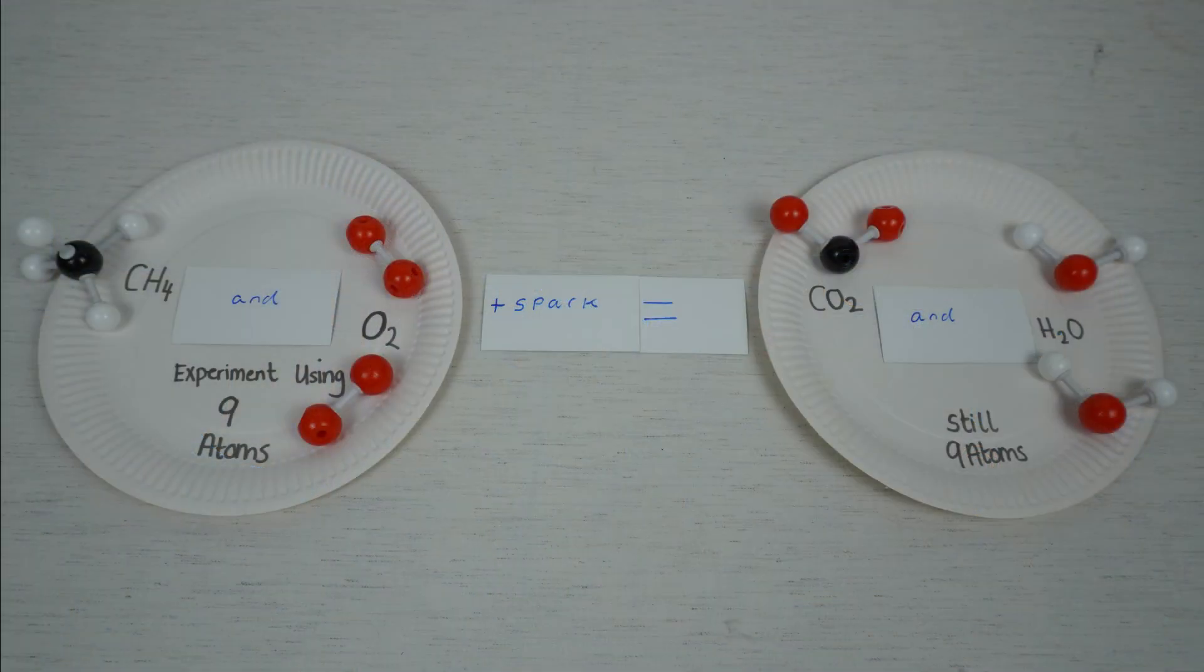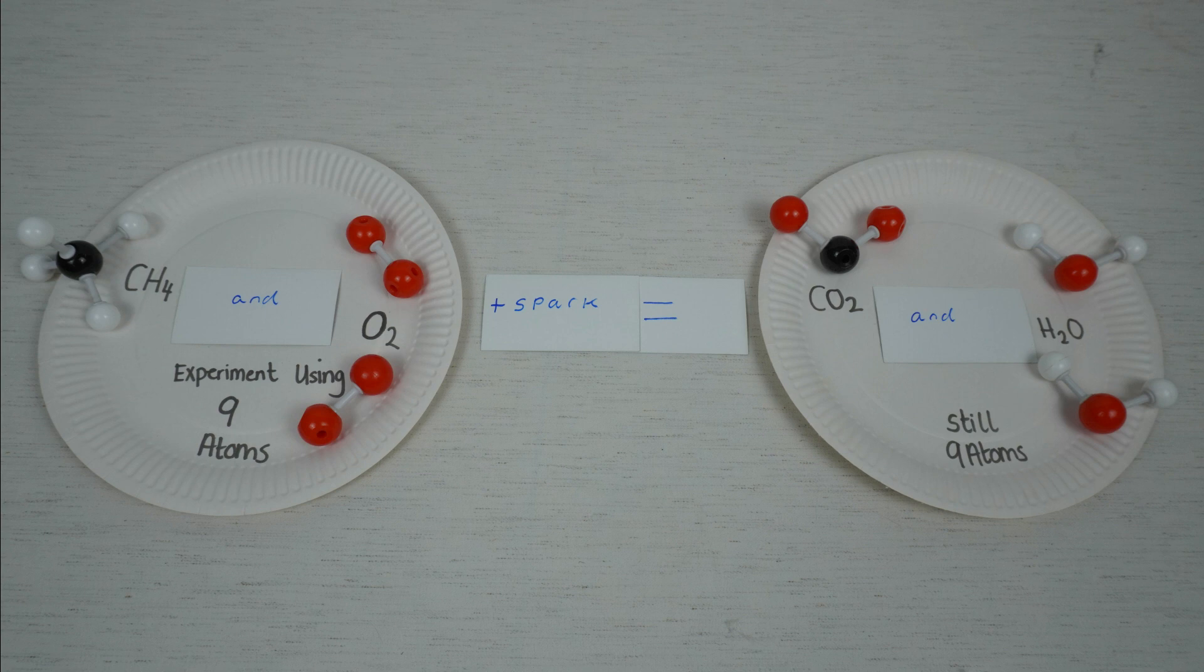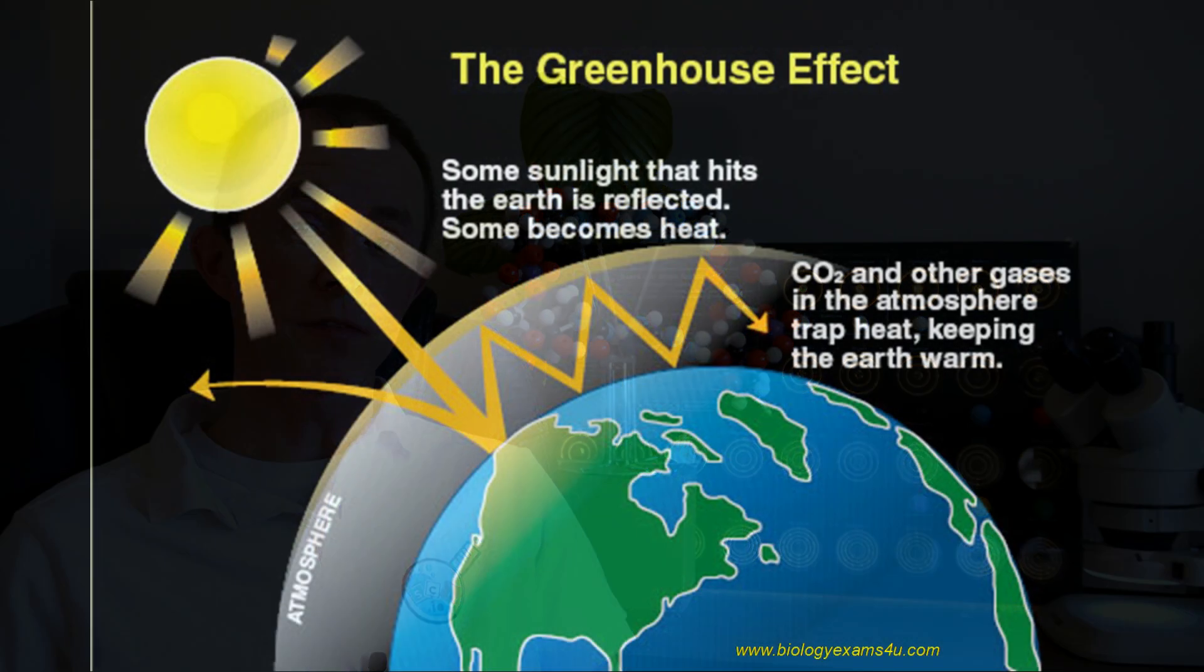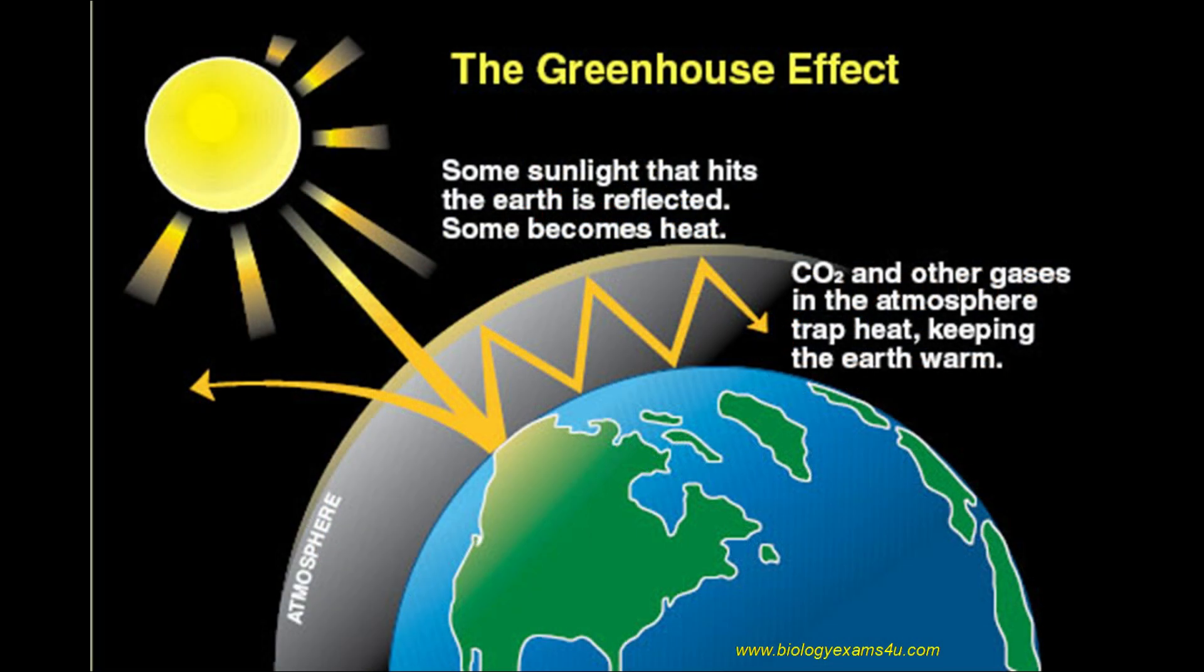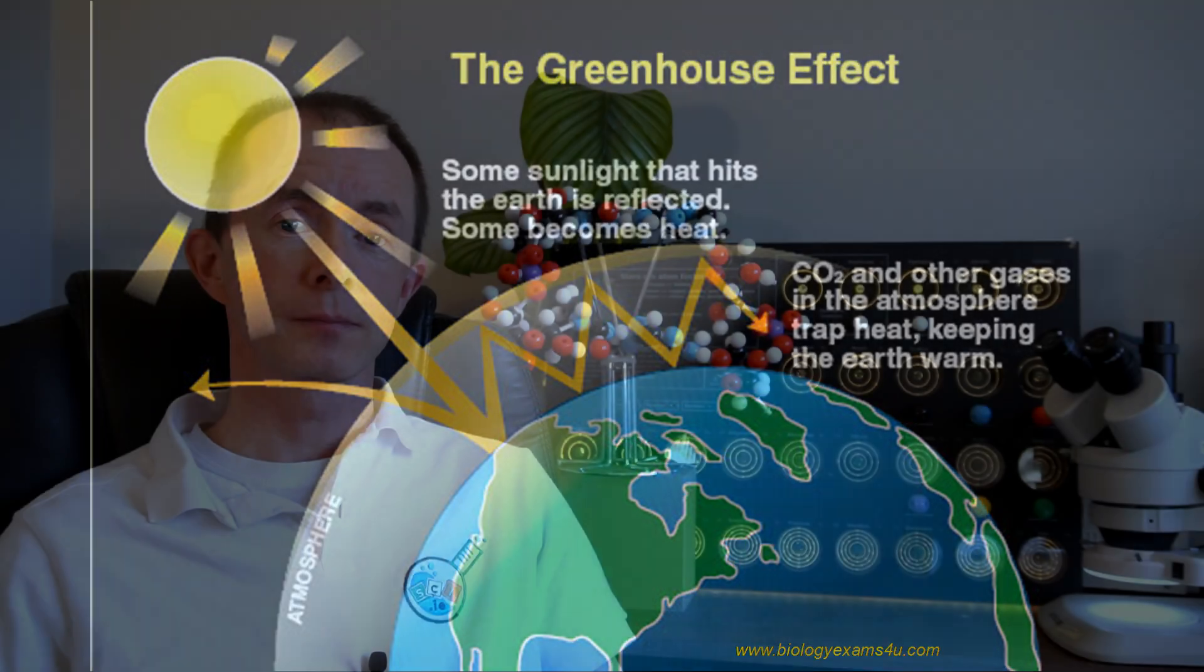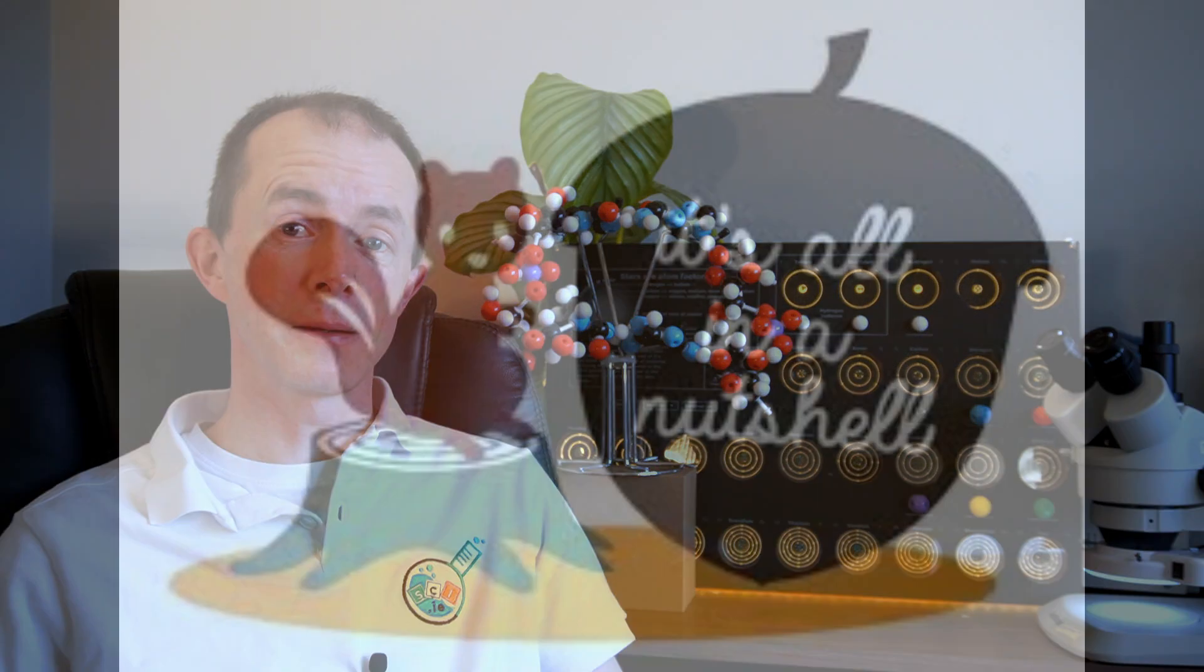So let's do a quick recap. Using our bag of nine atoms and six electrons and our paper plate, you can make methane gas and oxygen, simulate combustion, resulting in H2O and CO2. And that light comes into our atmosphere, hits objects, and that infrared part of the spectrum of light can get trapped between the ground and the atmosphere. And that's basically climate change in a nutshell.